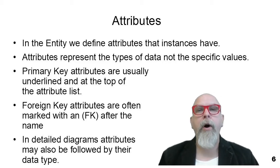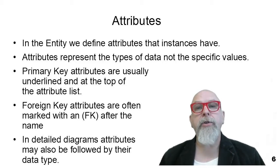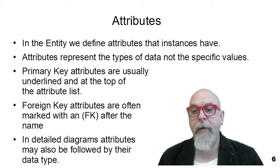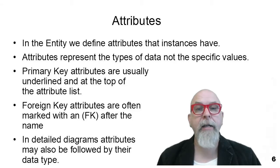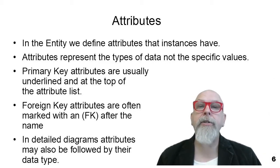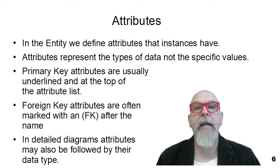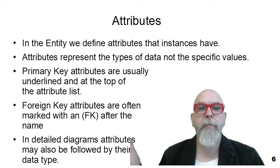There's usually one or a small group of attributes that we call the primary key. These attributes are used to uniquely identify an entity. For instance, a student ID number would be the unique attribute that defines a student — only one student will ever have that student ID number. There are times when we concatenate multiple attributes together to make a concatenated primary key. In an entity relationship diagram, the attributes that are the primary key are underlined, and we usually put them at the top of the list of attributes because they're important.